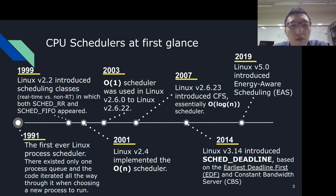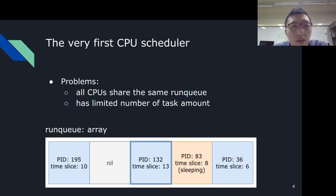We can even say that the evolution of the CPU scheduler is basically the evolution of the kernel itself, because, for example, multi-core processors didn't exist in the early years of the kernel. The very first CPU scheduler traverses the whole run queue to find a task with the highest timeslice. The problem with this scheduler is that all CPUs share the same run queue, which leads to bad scalability, and it has a limited number of tasks due to the nature of the array.